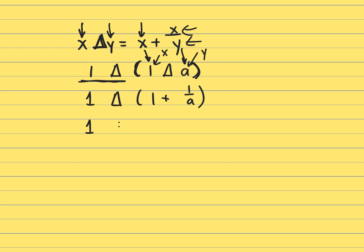Let's bring down the one and I'm going to simplify. I'm going to get a common denominator. One is a over a plus one over a. So that's going to be one triangle, a plus one over a.